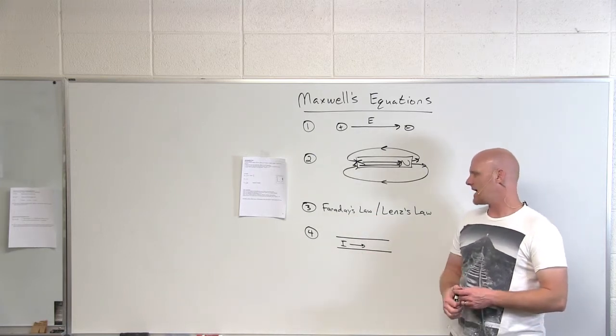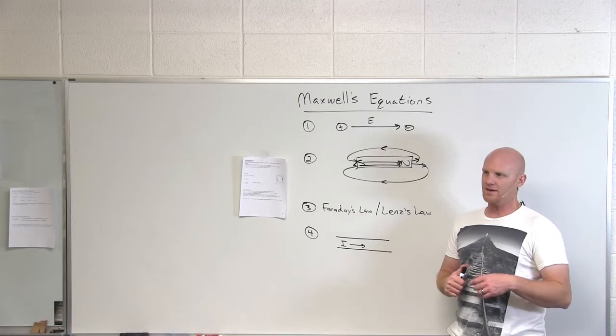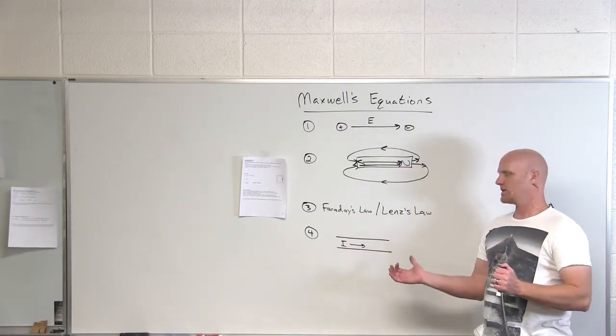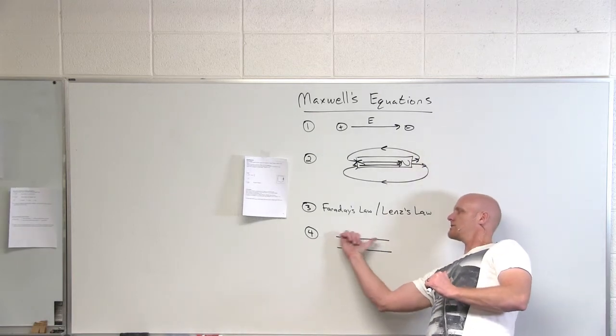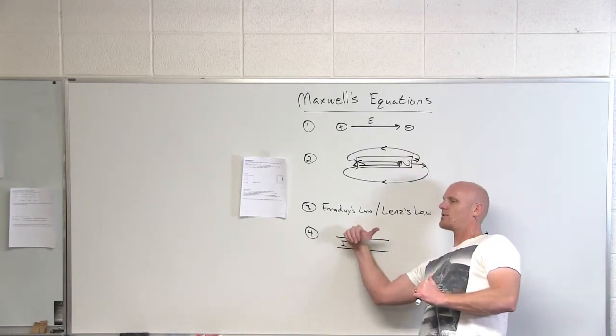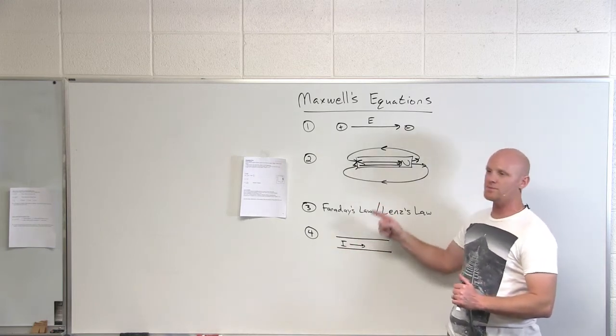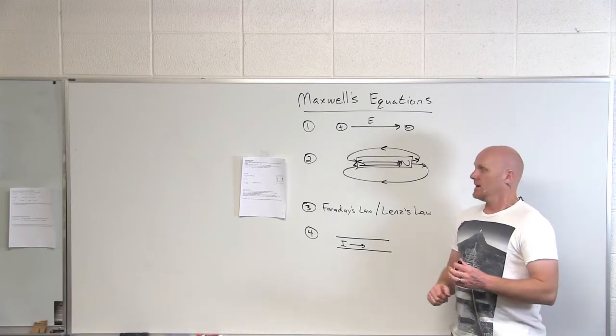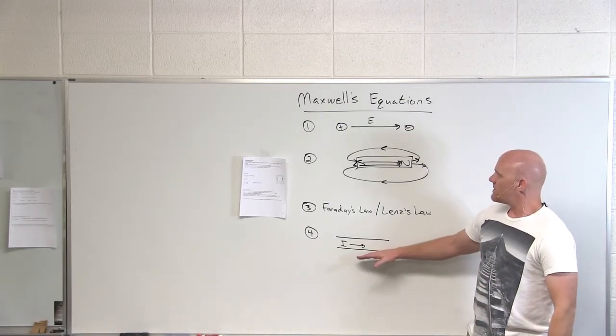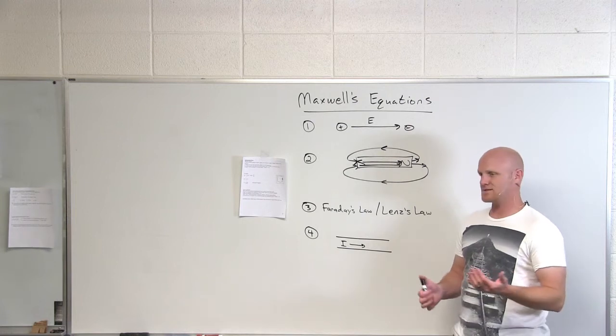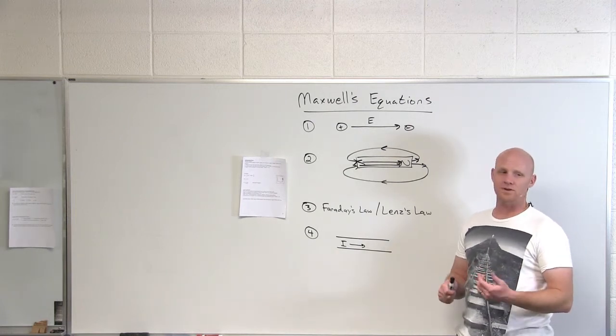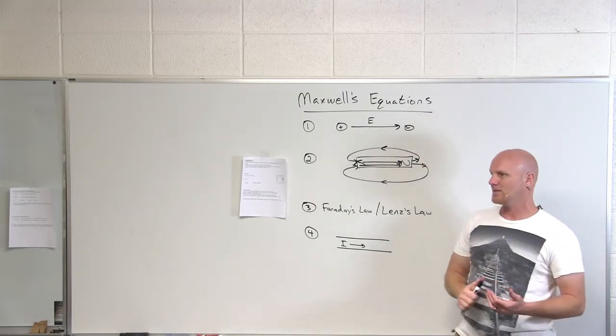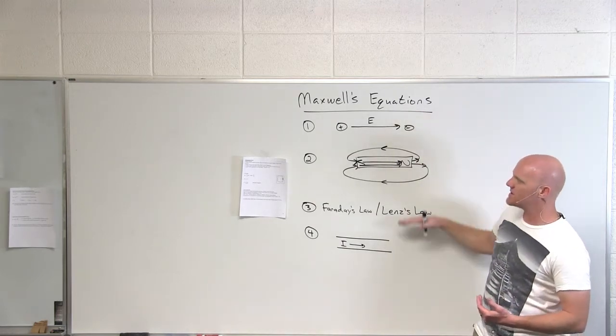And then finally, he looked at moving charges being able to cause a magnetic field. We saw this with a current. So a current is moving charges. And if we look at the right-hand rule, we could say that moving your thumb in the direction of the current, your fingers wrap around in the direction of the magnetic field caused by that current. And we had an equation, b equals mu not i over 2 pi r. That's ultimately what Maxwell's fourth equation summarized, and that's actually a relation to Ampere's law. These first two are relations to Gauss's law for both electricity and magnetism. And so ultimately, that's what Maxwell's equations said.